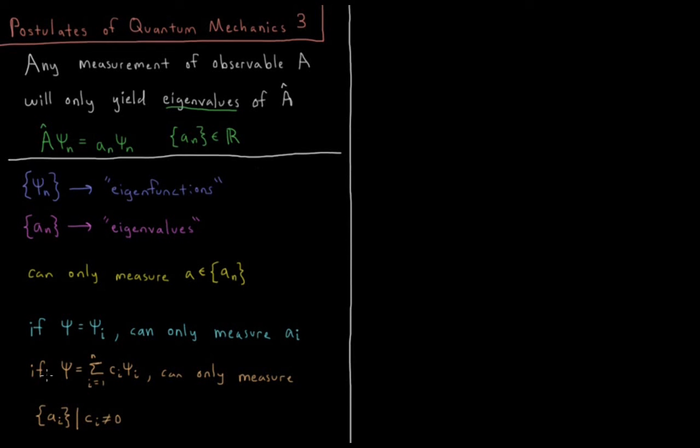In general, as we'll see, our wave function can be a linear combination of these eigenfunctions. It can be a sum over all of the eigenfunctions from 1 to n of some coefficient times the eigenfunction. In this case, we'll only be able to measure values for the property A that correspond to eigenvalues where the coefficient for that individual eigenfunction is not equal to 0. We'll see this later in the superposition principle.